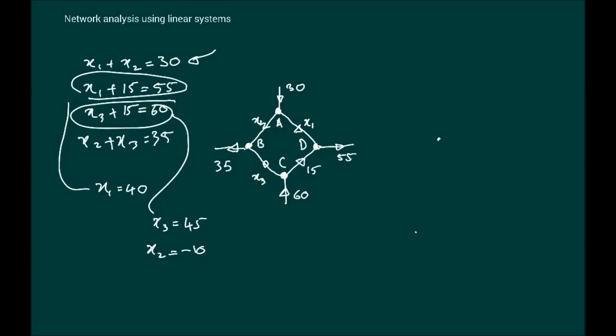Minus 10, just to interpret, if it says minus 10, it would mean that the direction we've chosen for X2 here is not going to go in that direction. In fact, it's going to go in the opposite direction. So the X2 is going to be going in the opposite direction to what we have drawn here. It will be like this, that will be the flow for X2.